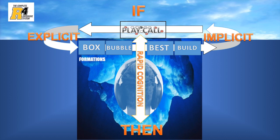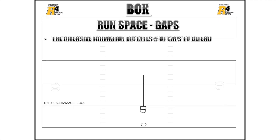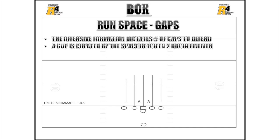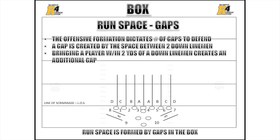The first component of the B4 game planning bridge is evaluating the box and understanding what it tells us. The box is dictated by the formation, which contains gaps of run space. The offensive formation dictates the number of gaps to defend. A gap is created by the space between two downed linemen. Gaps are labeled with letters starting with A's between the center and guard, and work out to B, C, D, and E gap from there. Bringing a player within two yards of a downed lineman creates an additional gap. Formations will present anywhere from six to ten gaps of space.